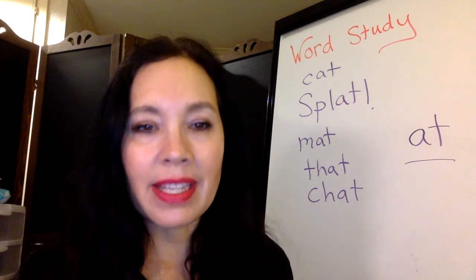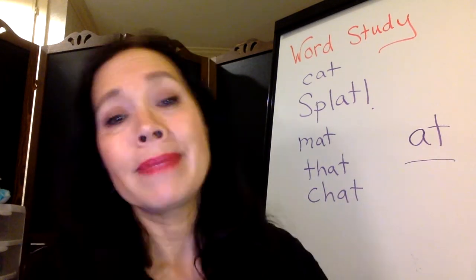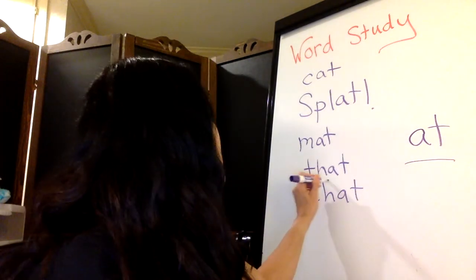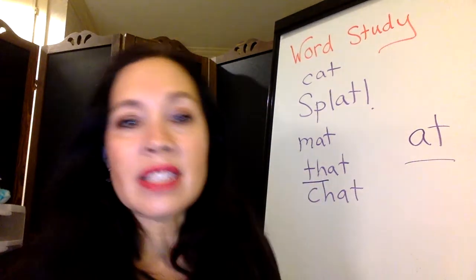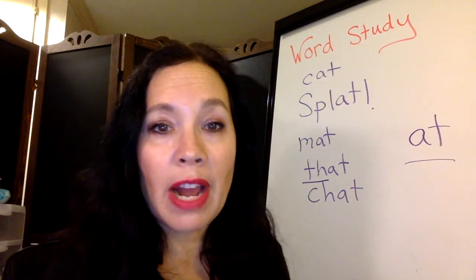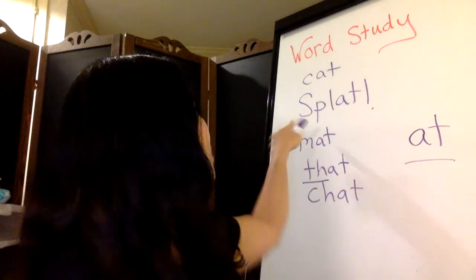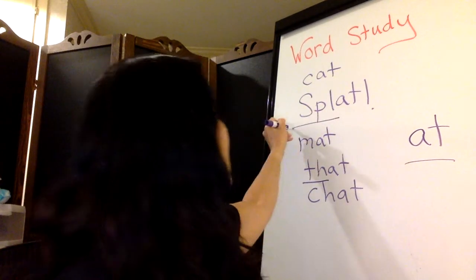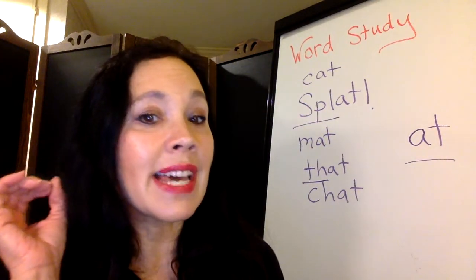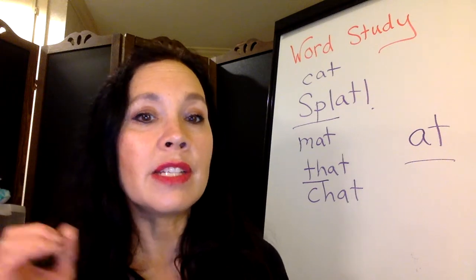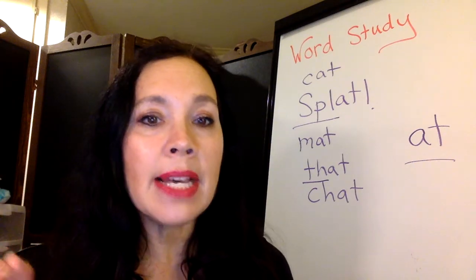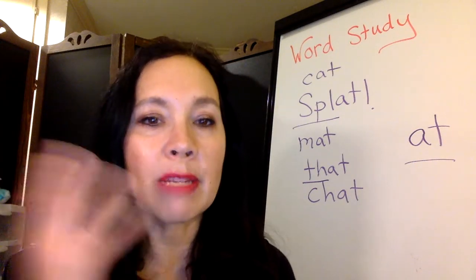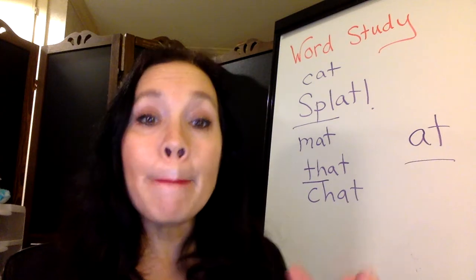Then the cat said, 'Sorry about that.' The 'th' — that's called a digraph. A digraph is not a blend. This is a blend. A blend is when you can hear the sounds in it. So: S-P-L — SP, L — you can hear the sounds. That's a blend.